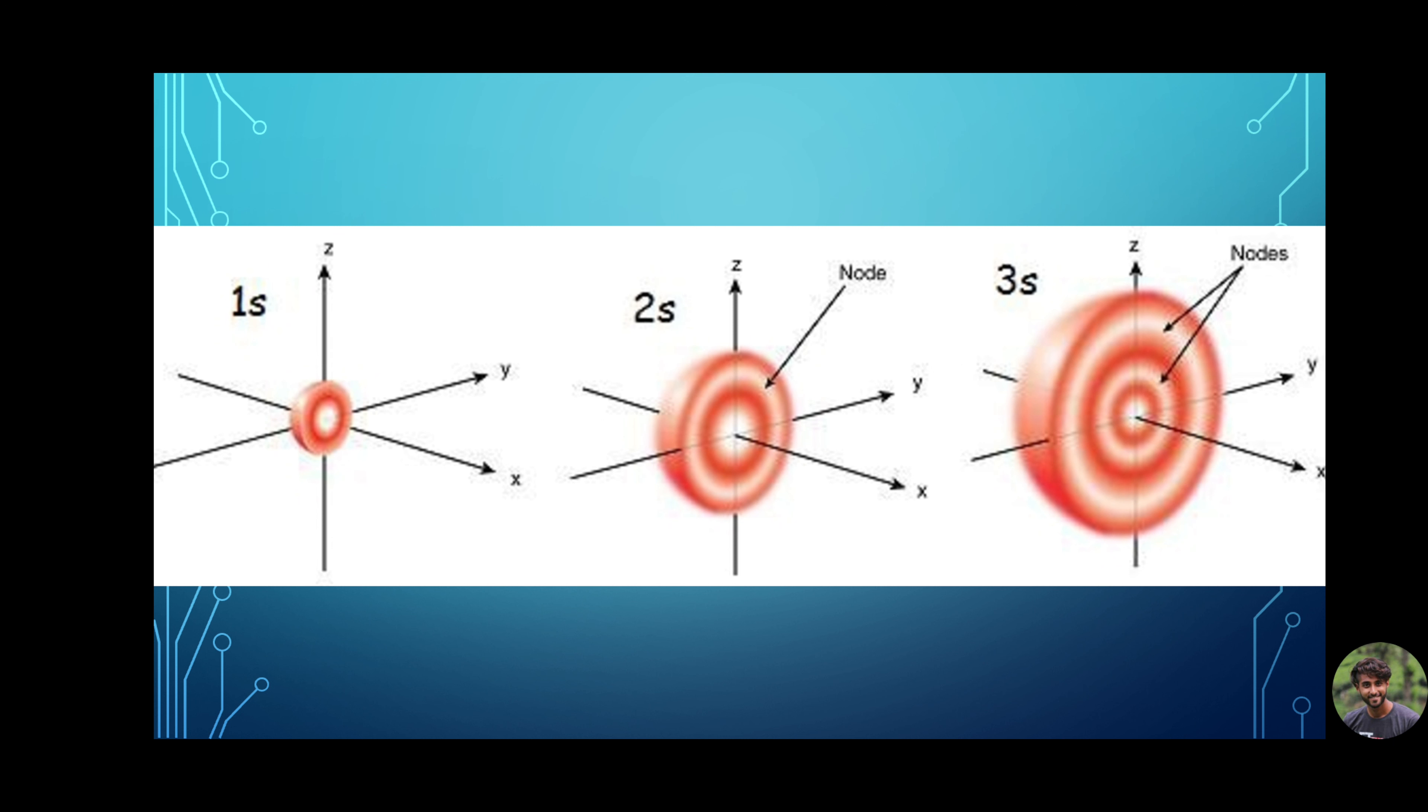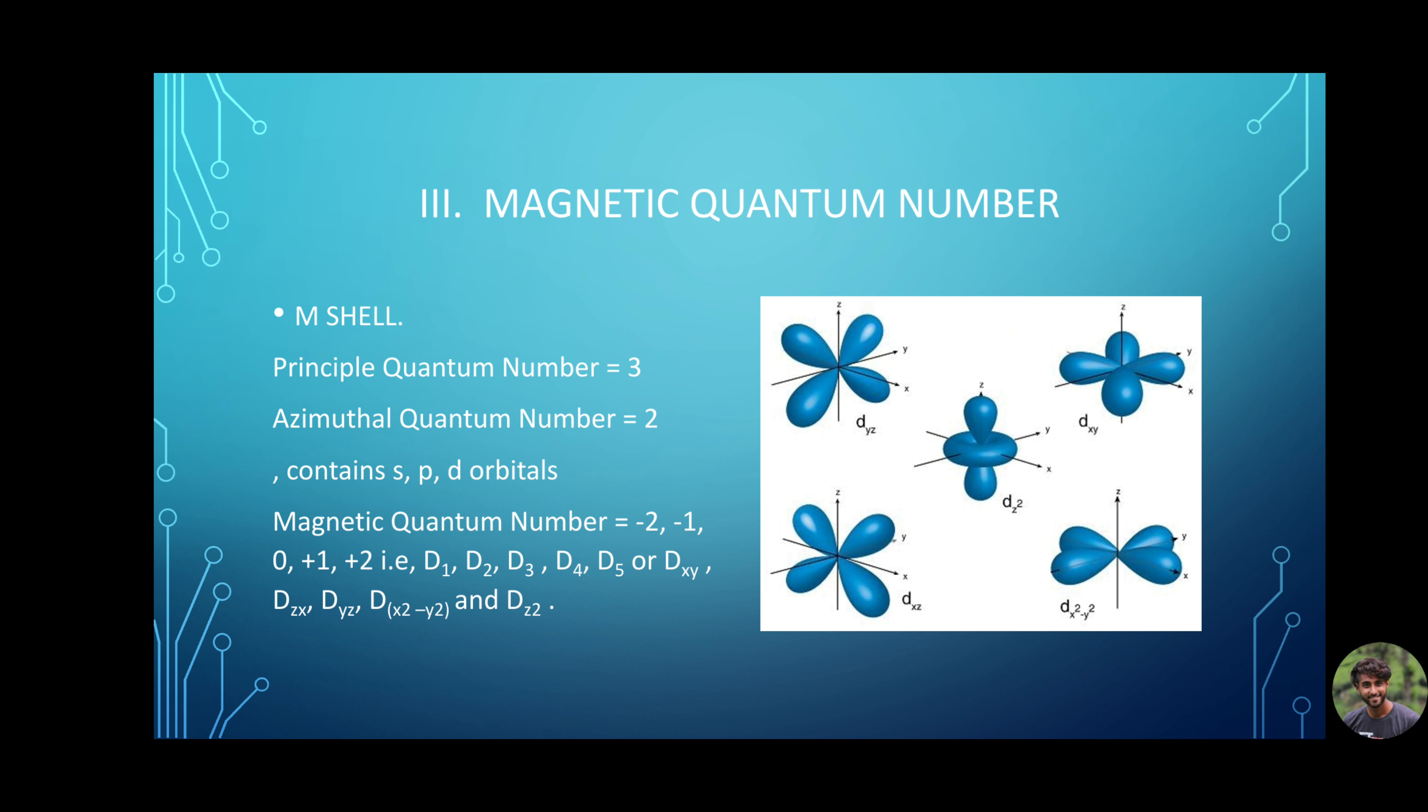M shell has principal quantum number 3, azimuthal quantum number 2 as it contains d orbital. Magnetic quantum number is -2, -1, 0, +1, +2. Remember, we already have one s subshell and one p subshell with px, py, pz. In addition to that, now we have one d subshell with -2, -1, 0, +1, +2. Or, dxy, dzx, dyz, dx²-y² and dz². The figure represents the d orbitals.